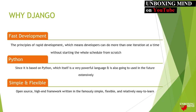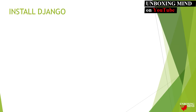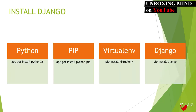Django setup requires four components. First, we need to install Python, because Django is built in Python. To install Python 3.6 on Ubuntu, run the command `apt-get install python3.6`. After installing Python, pip may already be included, but on some systems you will need to run `apt-get install python-pip`.